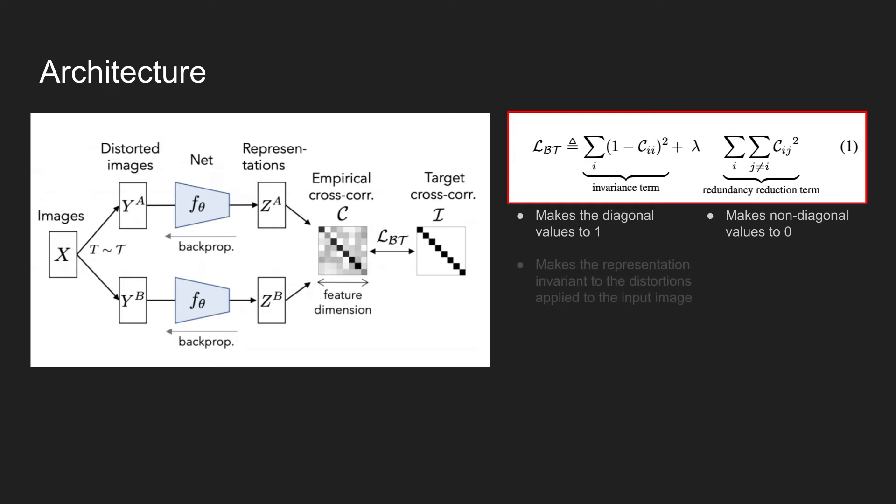The invariance term forces the diagonal values to become one and this makes the representation invariant to the distortions applied to the input image. On the other hand, the redundancy term forces non-diagonal values to become zeros and this decorrelates different vector components of the representation.